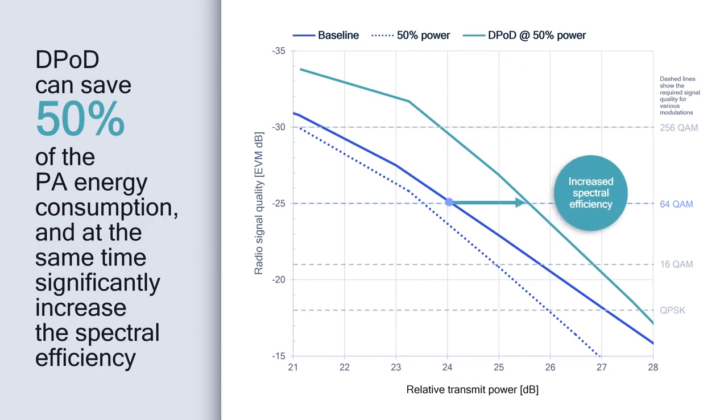Moreover, the new signal quality is actually better than the baseline, allowing us to increase the spectral efficiency by transmitting higher power and improving the communication link. In this demonstration, we have seen how digital post-distortion can save 50% of the energy consumption of power amplifiers and at the same time significantly increase the spectral efficiency.